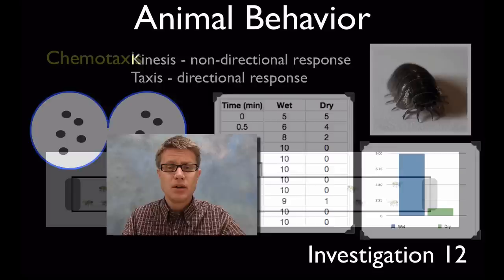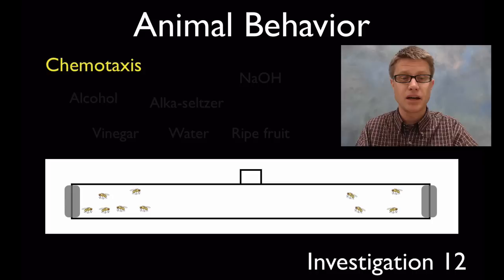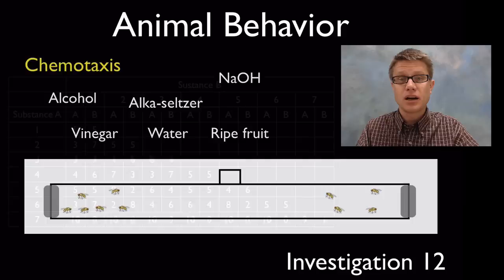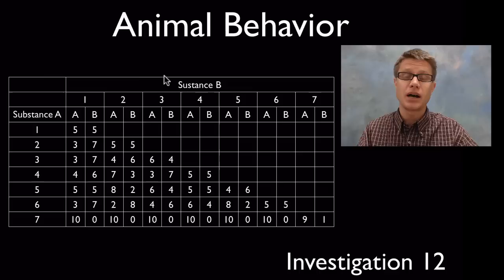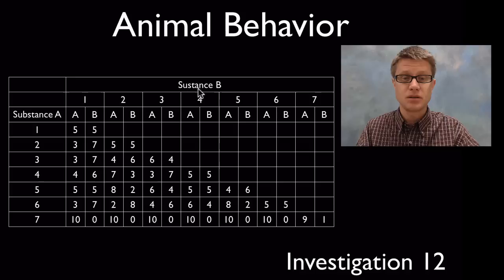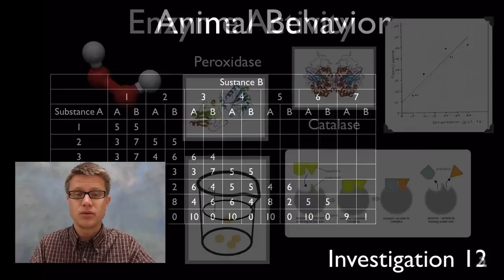Taxis is when you're going toward a specific stimulus. You could have a choice chamber with fruit flies. Introduce them in the middle and put different smells on either side: alcohol, vinegar, water, ripe fruit. Record the number that go to each side. Put that along a matrix with substance on side A and side B. If A is water, we might have five and five, that's our control. But we can figure out which substance they prefer. If this is ripe fruit, we've got ten on the ripe fruit side, zero on the control side. They're choosing ripe fruit.